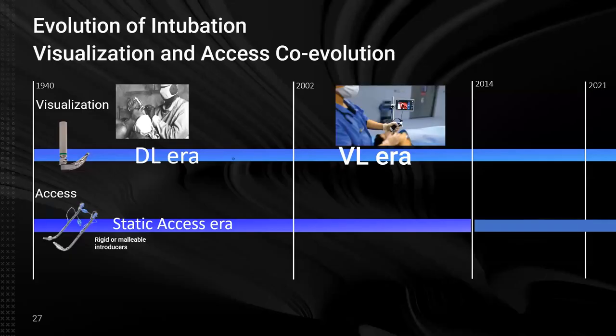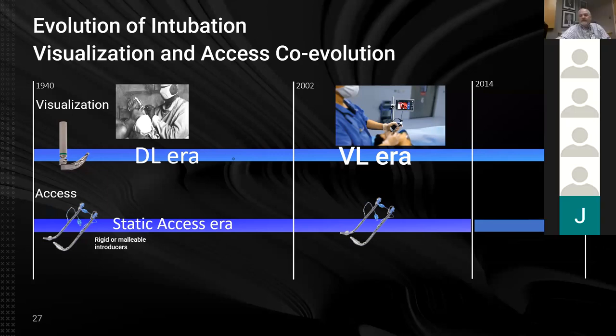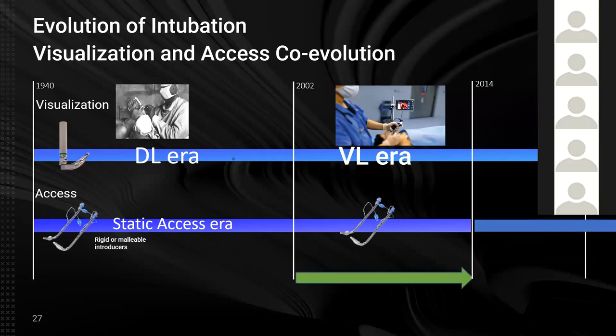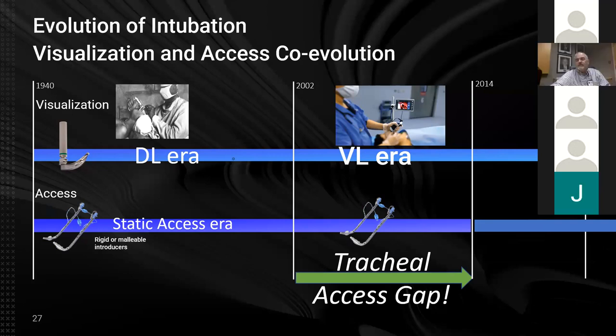We go back to our co-evolutionary timeline, and here's the problem: visualization has evolved, but access remains the same as it ever was — static access. This has created a tracheal access gap, and that tracheal access gap is what is causing failure now.